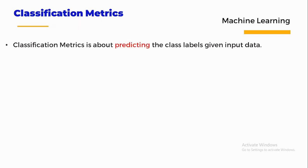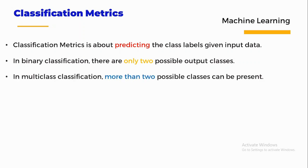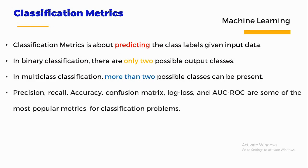Classification metrics are about predicting the class label given the input data. In a binary classification problem, there are only two possible output classes — true or false, or yes or no. In multiclass classification, more than two possible classes can be present. Precision, recall, accuracy, confusion matrix, log loss, and AUC-ROC are some of the most popular metrics for classification problems.